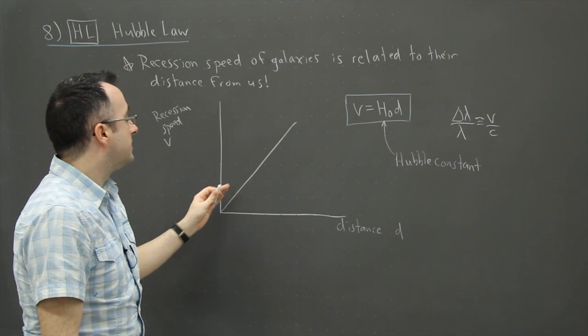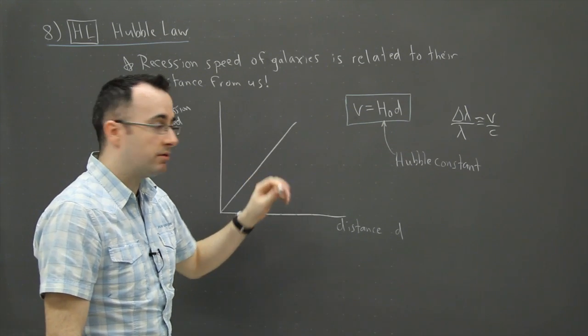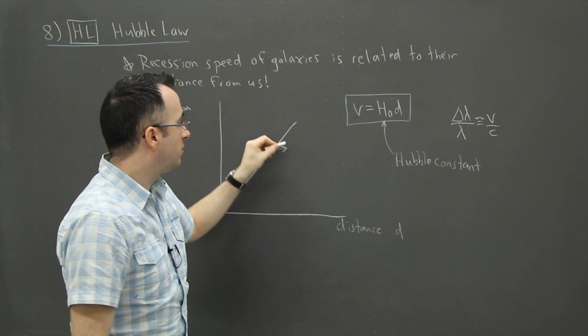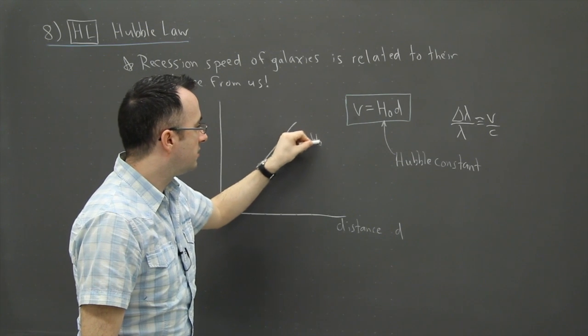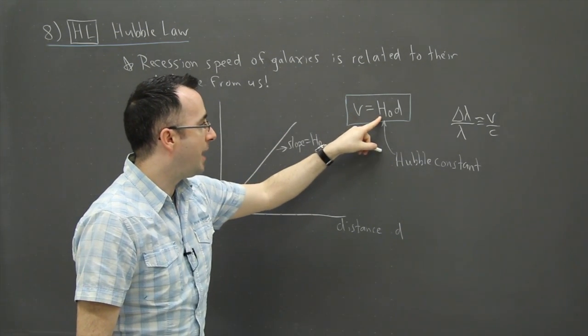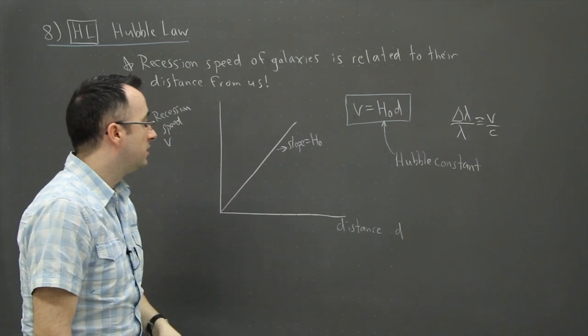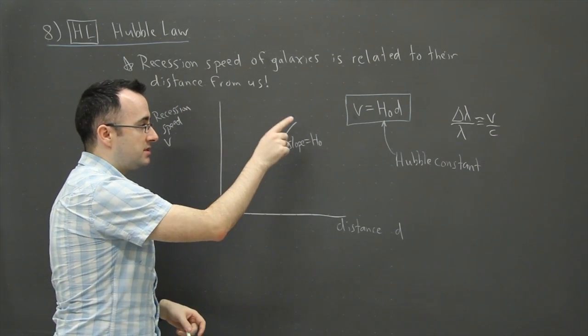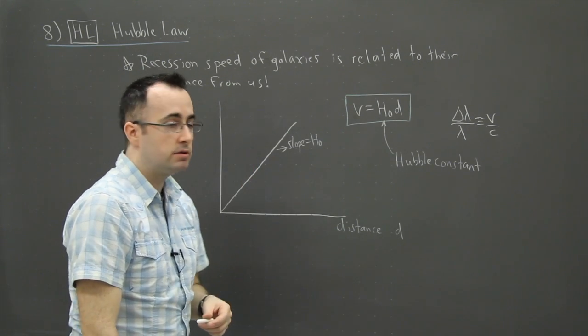Now what we can do then is look at this graph and we can say, what does the slope tell you then? If you understand linearization, you'll see that the slope is equal to H zero. Because remember, Y equals MX. M is the slope. So H zero is the slope. So V versus D graph, the slope is your Hubble constant. That's the first important thing I think you need to know about.